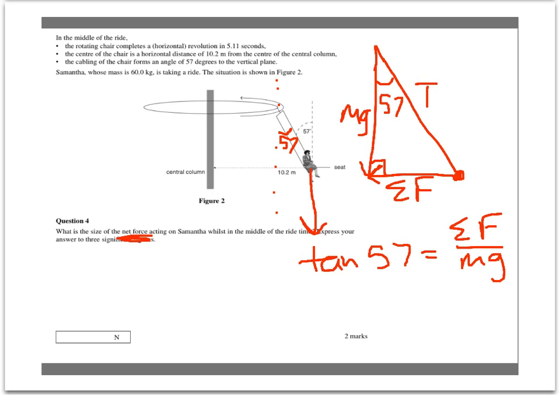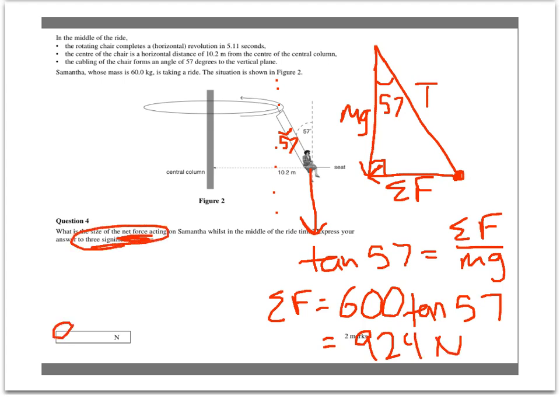So, rearranging that, we see that net force equals mg tan of 57. m in this case being 60, so it's 600 tan of 57, which works out to be 924 newtons, written to three significant figures. 924, just by a knowledge of trigonometry.